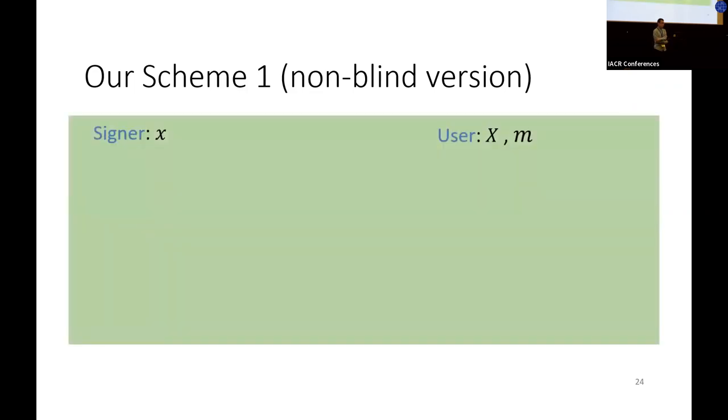I will now describe how we construct our first scheme with this idea. For simplicity, I will only give a non-blind version here. We can get a perfect blind version of it easily following some common tricks. For our scheme, the public parameter settings and the key generation are exactly the same as blind Schnorr. For doing the signing, the signer will additionally sample y, which is non-zero uniformly from Z_p, and send X, the public key, raised to y to the user.